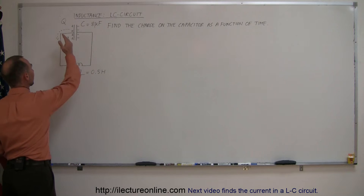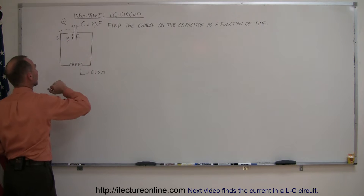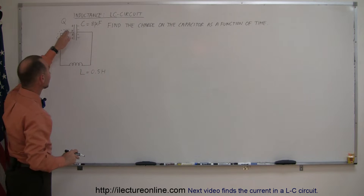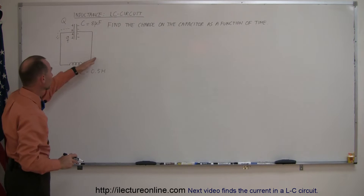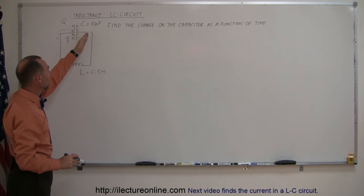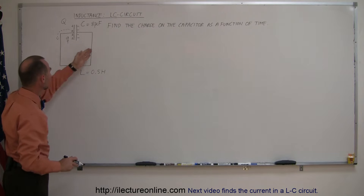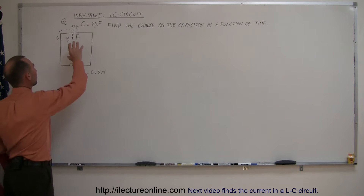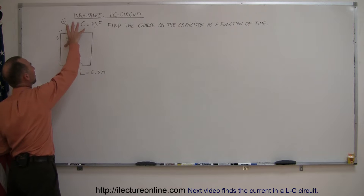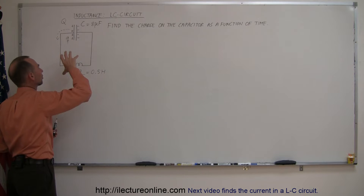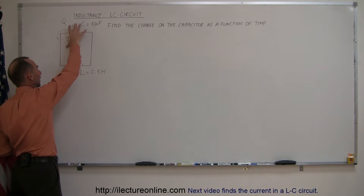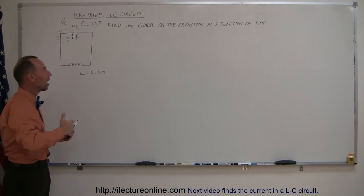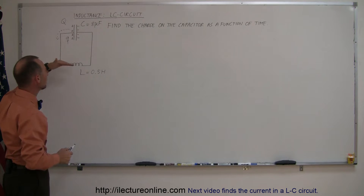if for example you put some charge on a capacitor and you connect it to an inductor like this, what's going to happen is that the current is going to go through the inductor to the other side, then go back and forth. You're going to build up some energy on the capacitor, then on the inductor, back to capacitor, back to inductor — so you're going to have an oscillating current back and forth between these two.